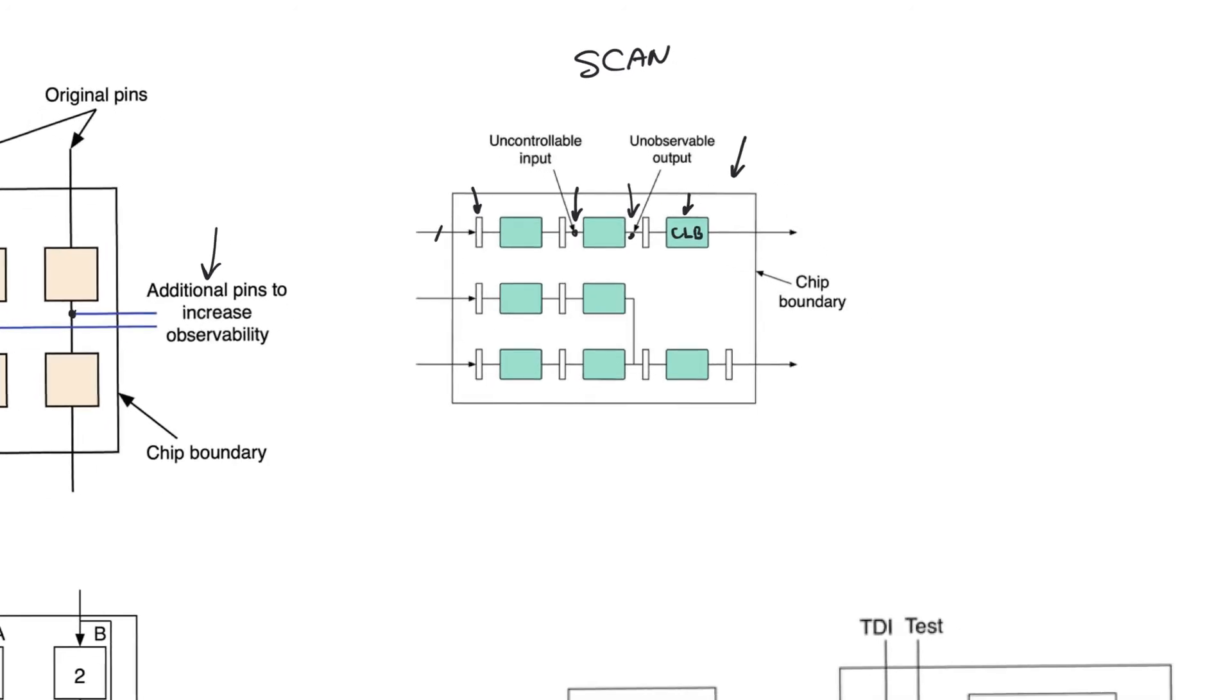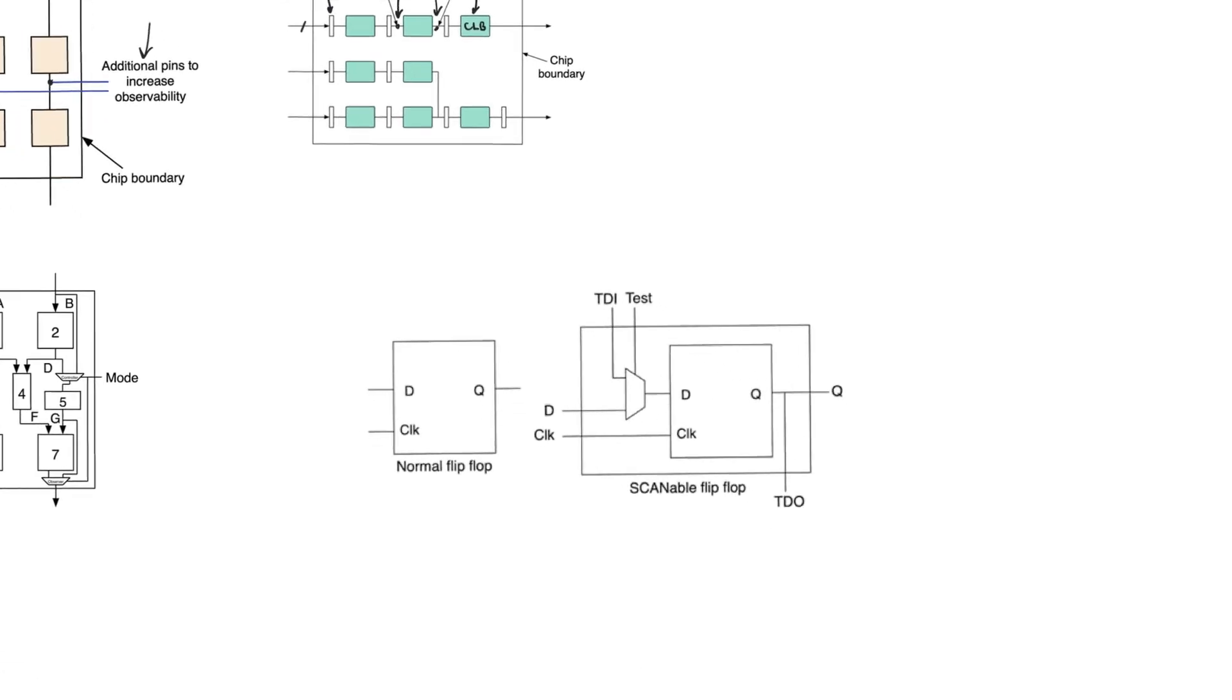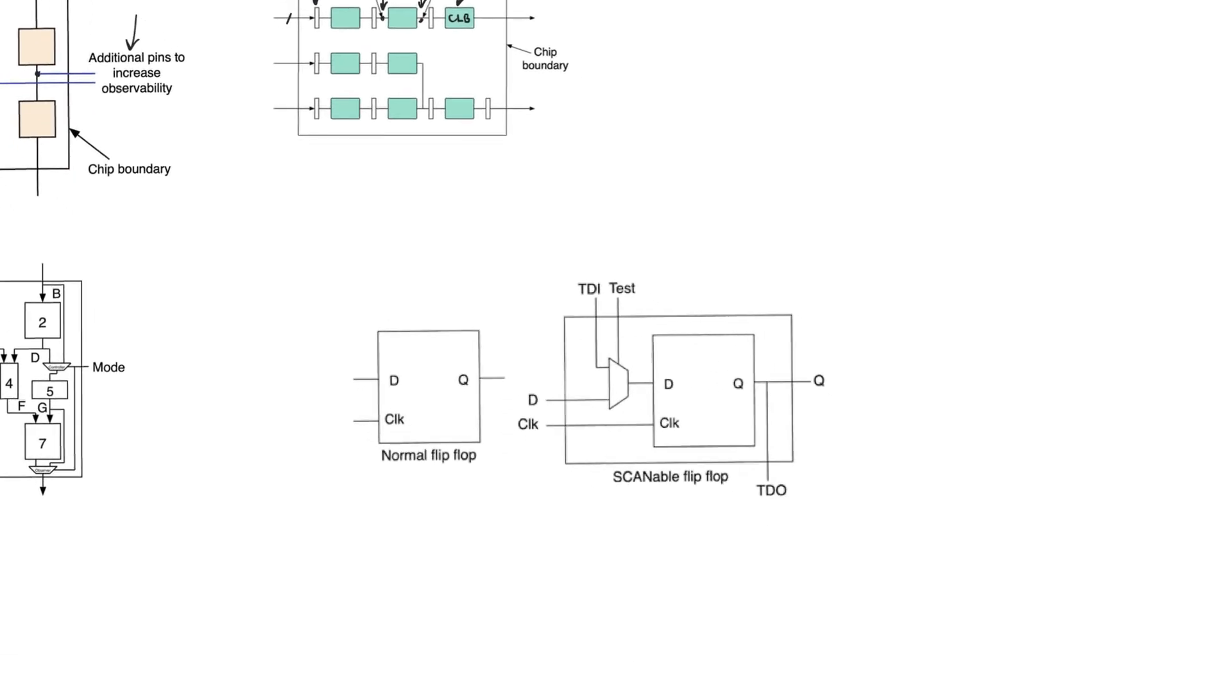So the way to deal with this is to design something called a scan register. Once we design the scan register, what's going to happen is that we are going to replace every register in our design by a scan register. To be more specific, we will replace every single pipeline register in our design with a scan register. So this could be done manually, but it usually can be handled by the tool, by the CAD tool. So the CAD tool knows to replace any declaration of a register in VHDL with a scan register instead.